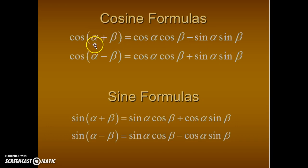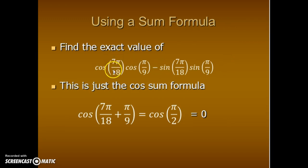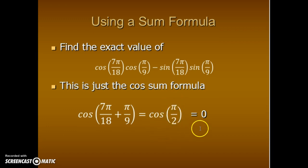So I'm going to find angle alpha and angle beta and add them together. I need 7π over 18 plus π over 9. Converting π over 9 to 2π over 18, we get 7π over 18 plus 2π over 18 equals 9π over 18, which simplifies to π over 2. The cosine of π over 2 is 0.